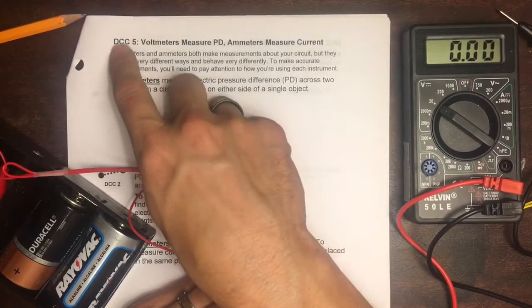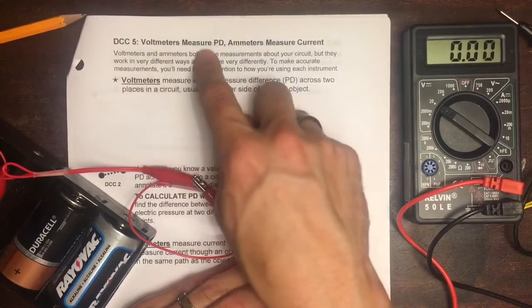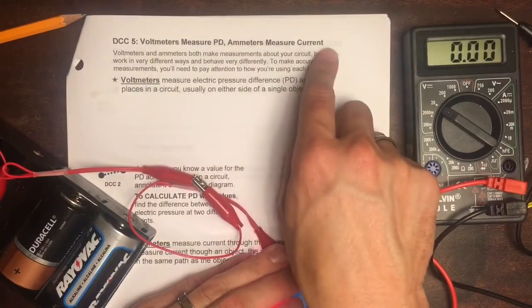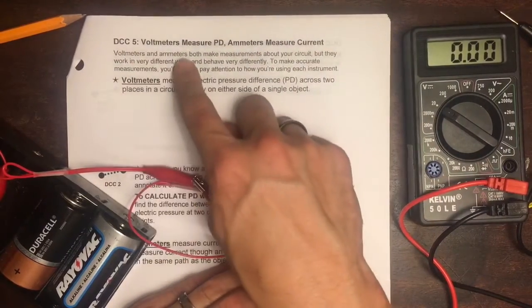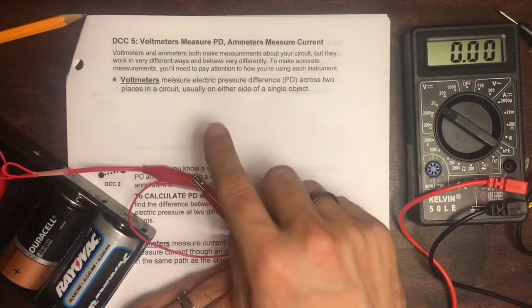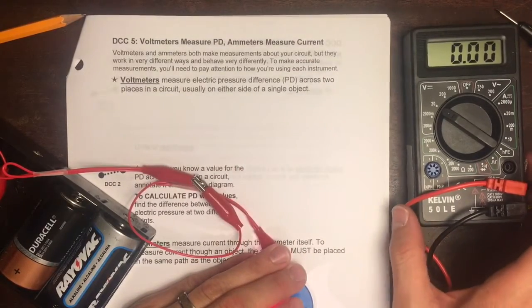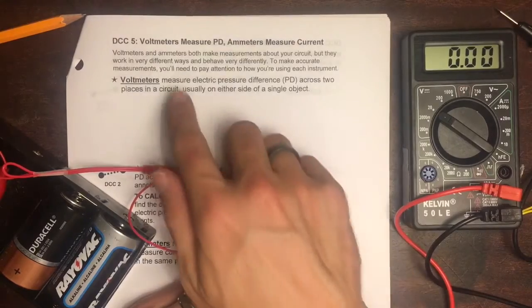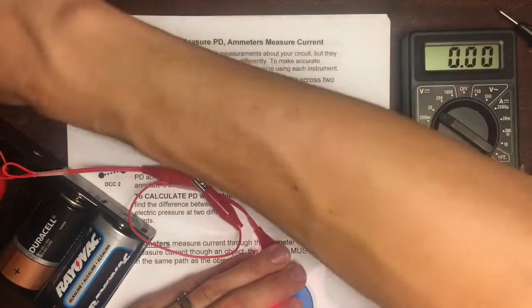Hi, this is our video for DCC5. Voltmeters measure pressure difference, ammeters measure current. Voltmeters and ammeters both make measurements about your circuit, but they work in very different ways and behave very differently. To make accurate measurements, you'll need to pay attention to how you're using each instrument.